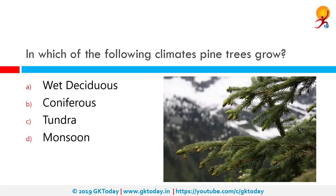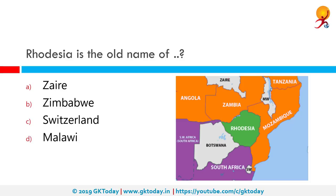In which of the following climates do pine trees grow? Pine trees have needle-like leaves which are attuned to very low temperatures and little water. These are mostly found in cold climates but also in warm climates, and the correct answer is coniferous. Rhodesia is the old name of which place? Rhodesia was a country in southern Africa that only existed between 1965 and 1979. In modern day, it is equivalent in territory to Zimbabwe.